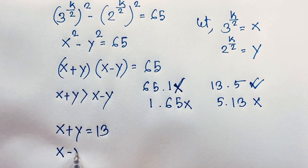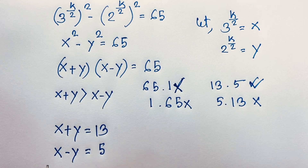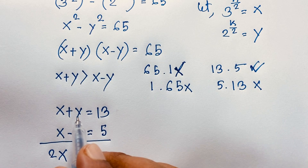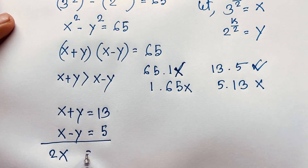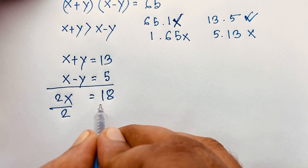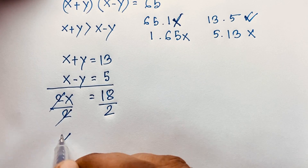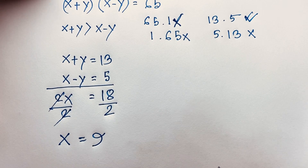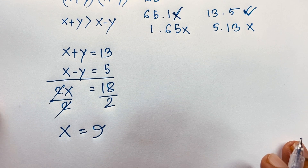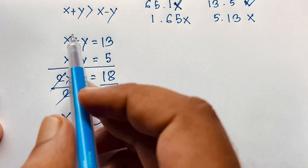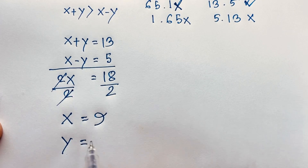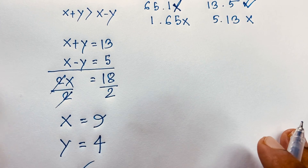So x plus y equals 13 and x minus y equals 5. Adding both equations: 2x = 18, so x equals 9. Then substituting back: 13 minus 9 equals 4, so y equals 4.